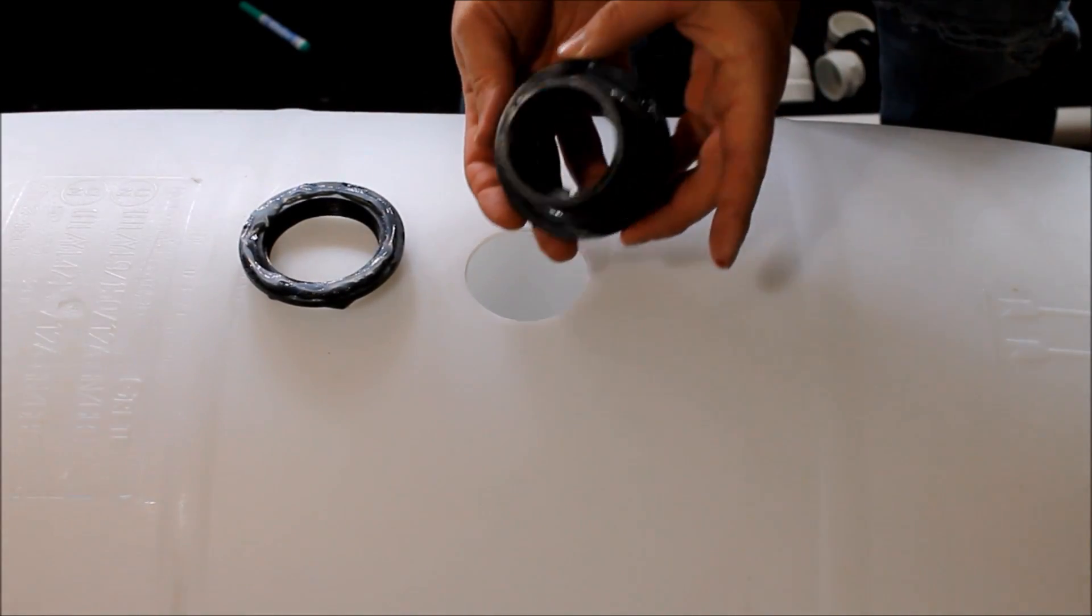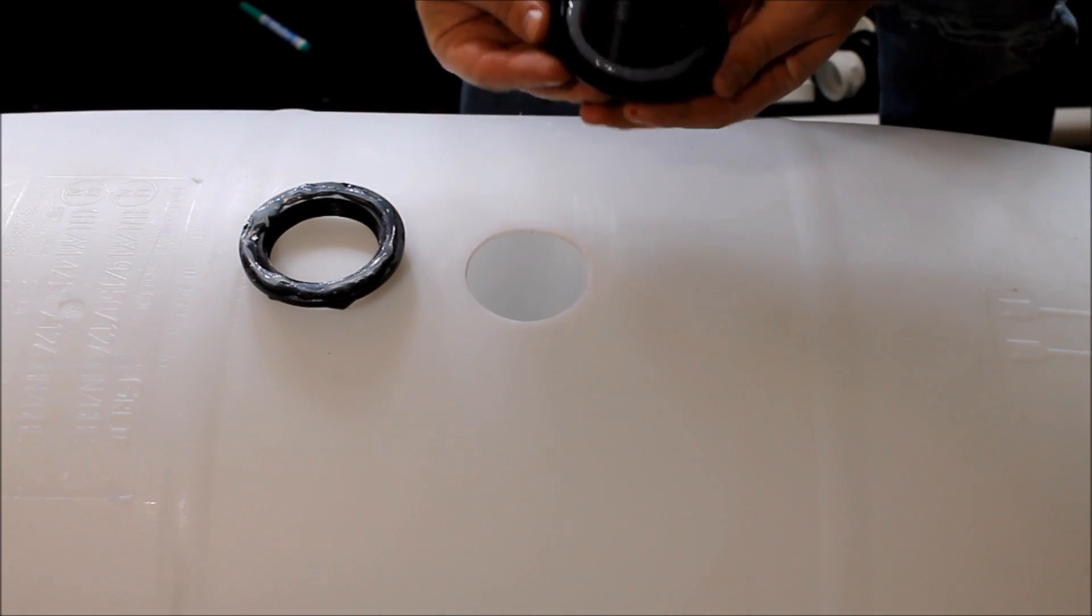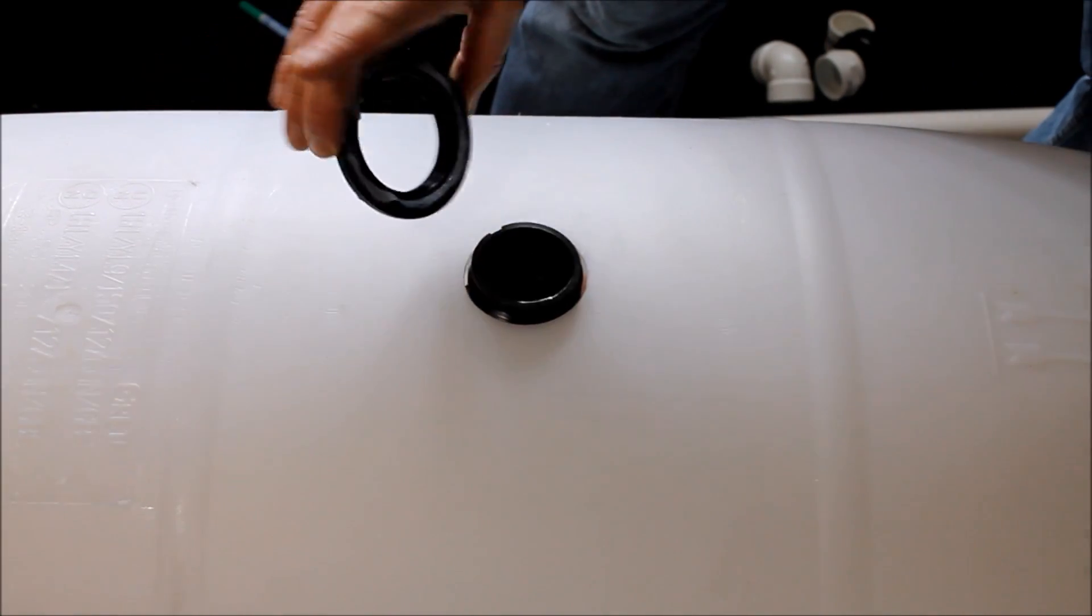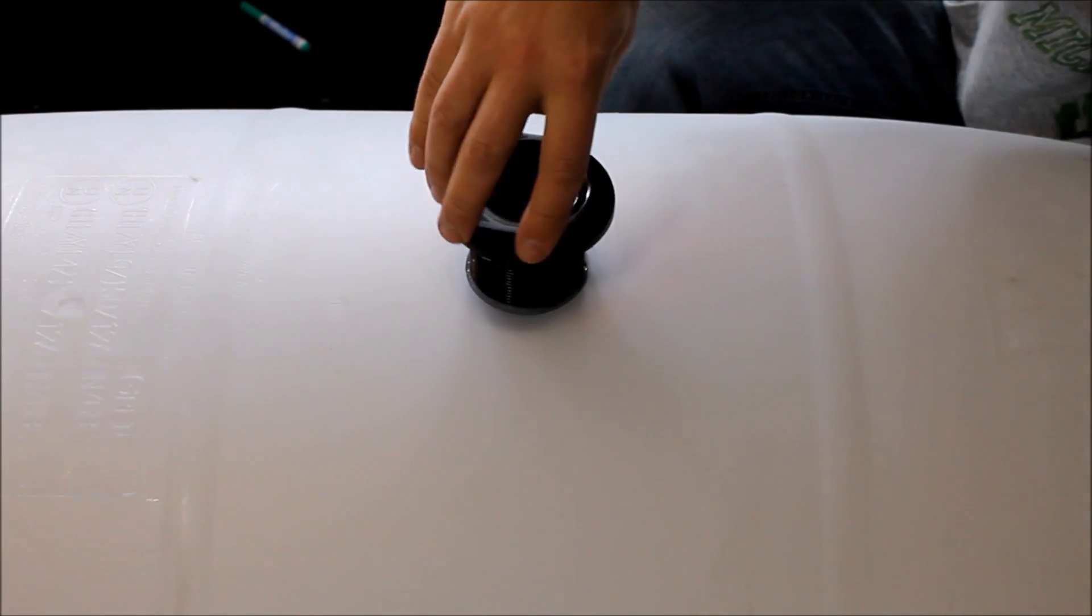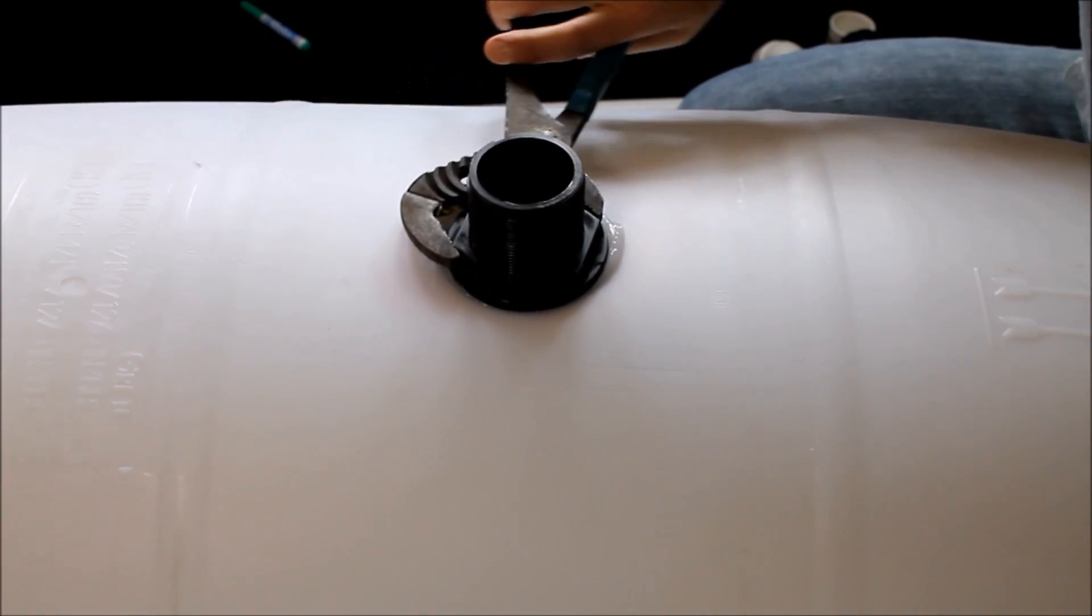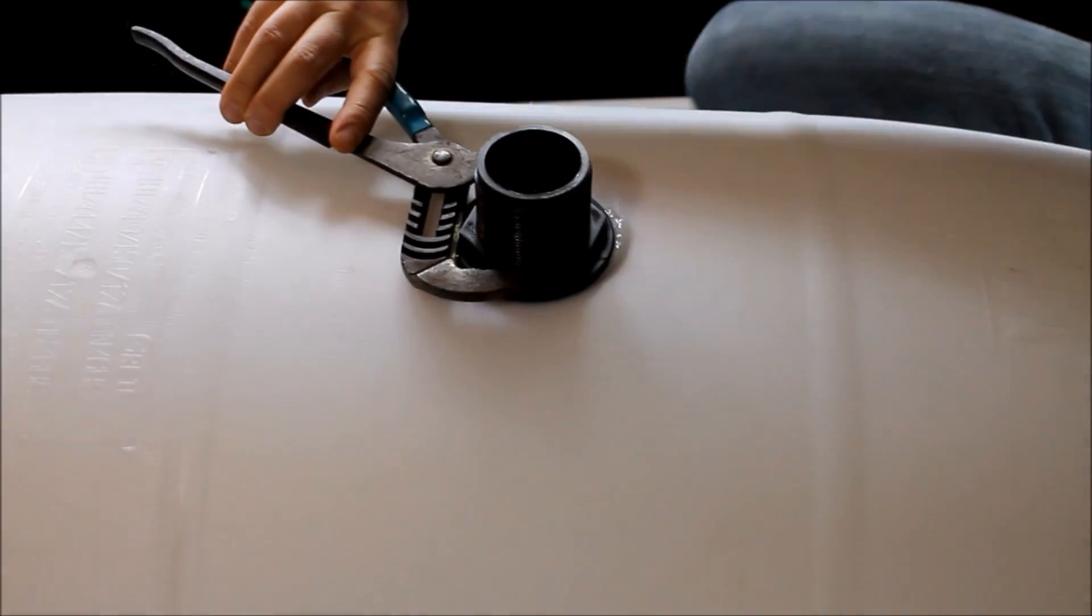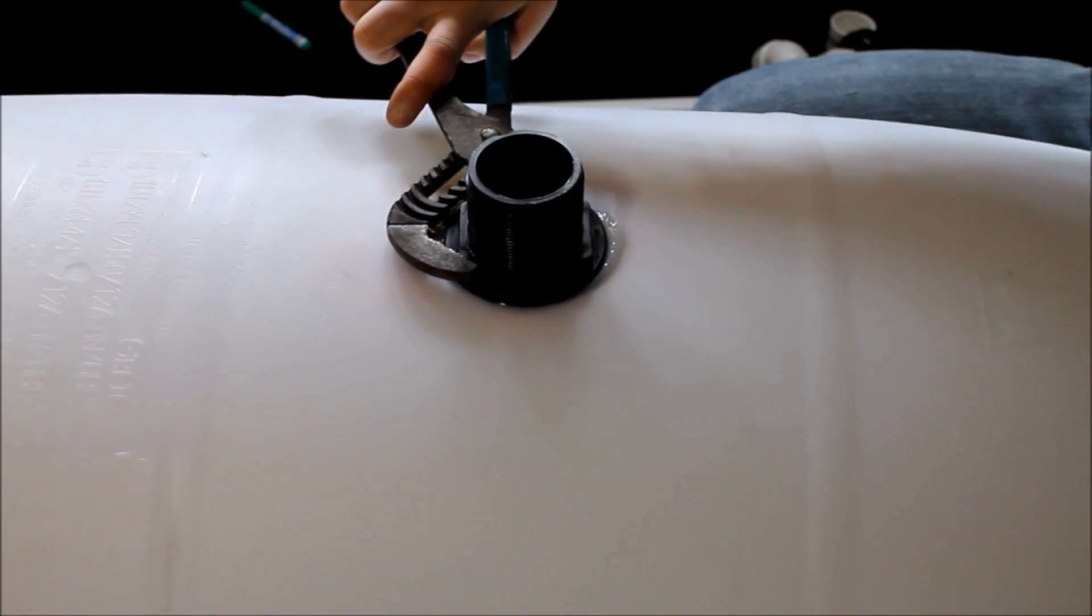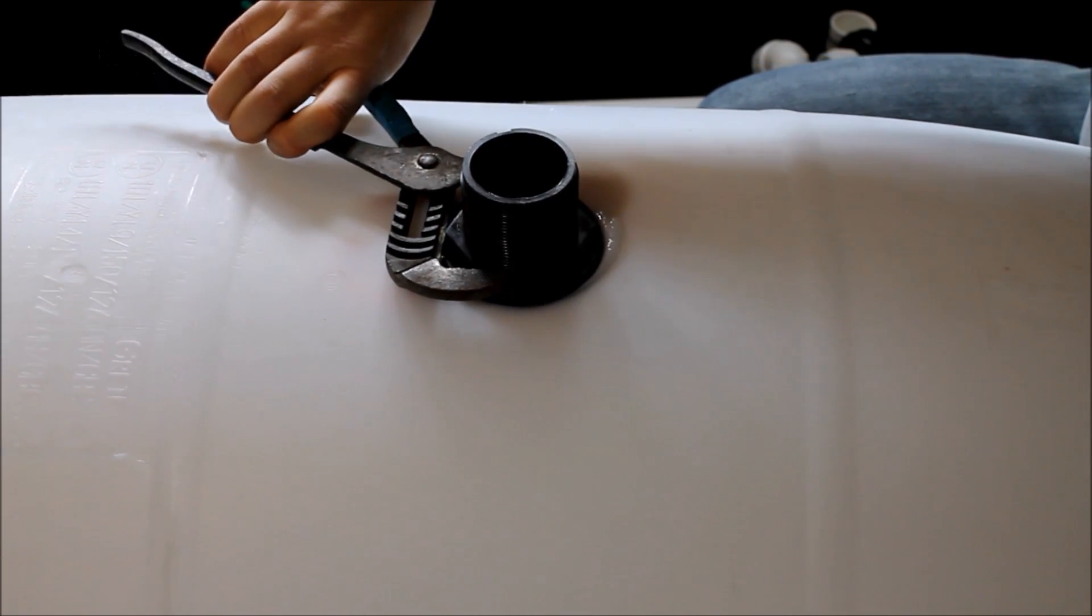Just for good measure, I always throw a bead of waterproof or underwater silicone on the bulkhead adapter just to make sure we get a nice seal there. Once we get it hand tight, I just put a couple good turns on it with some channel locks. You've got to be kind of careful. You don't want to over-tighten because you can crack the PVC, but it needs to be tight enough to seal.